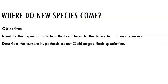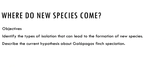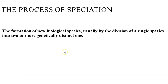So where do new species come from? That's the goal of the first part of this video. We want to identify the types of isolation that can lead to the formation of new species, and understand the general hypothesis about how those famous finches that Darwin saw came to exist. The formation of new species is usually by the division of a single species into two or more genetically distinct ones. That's called speciation — the formation of new species.